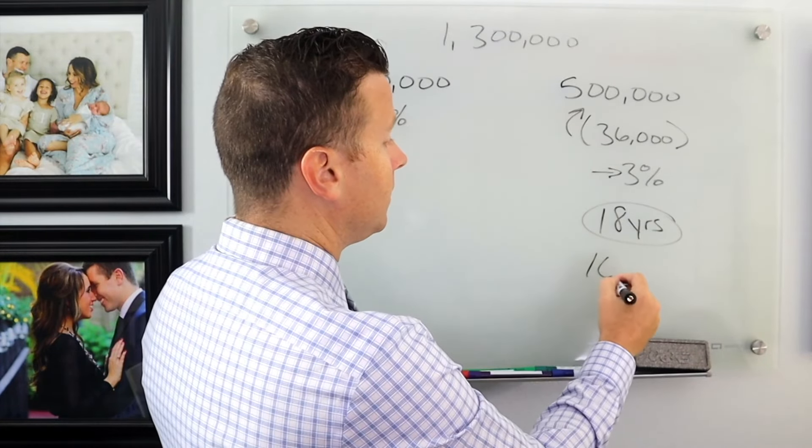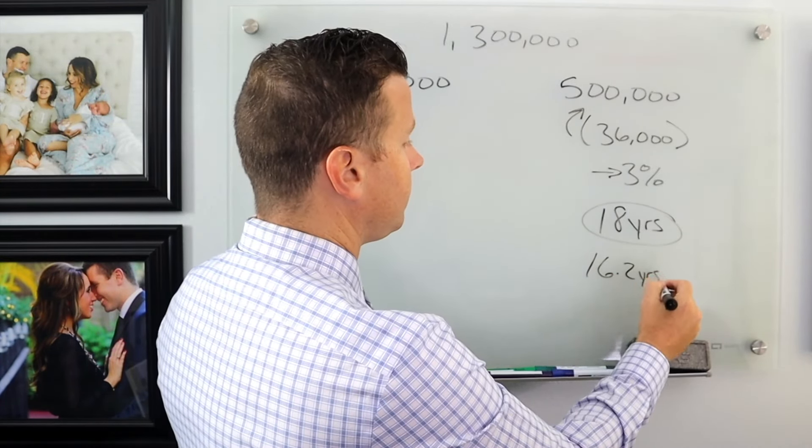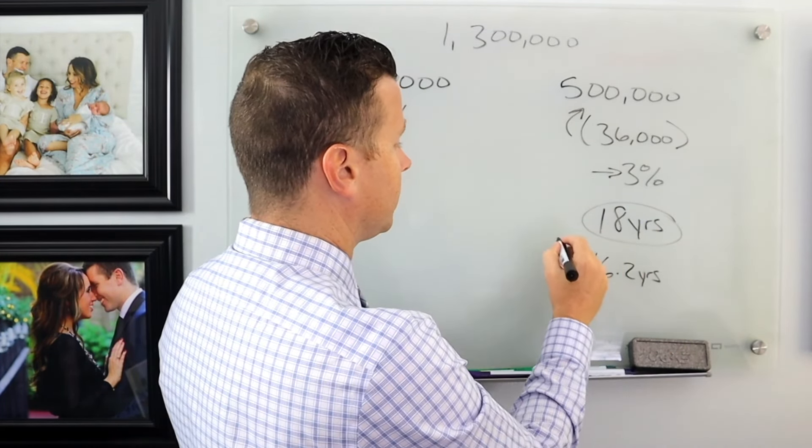Now let's say we earn 2%. How long is that going to last? 2% lasts 16.2 years. So this is 2% growth.